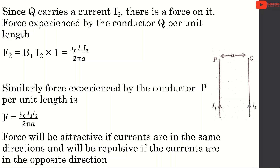Q will experience the magnetic field B1 equal to mu0 I1 divided by 2 pi A. Q is a current carrying conductor, and this is also a current carrying conductor. One current carrying conductor placed in a magnetic field means a force is experienced. Using the force equation B I L, the force equals mu0 I1 I2 divided by 2 pi A. The force experienced by conductor P per unit length is equal to mu0 I1 I2 divided by 2 pi A.